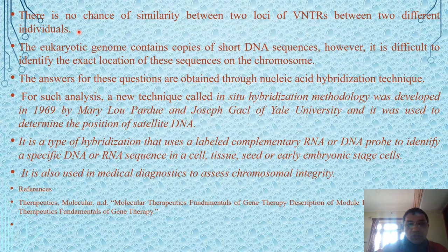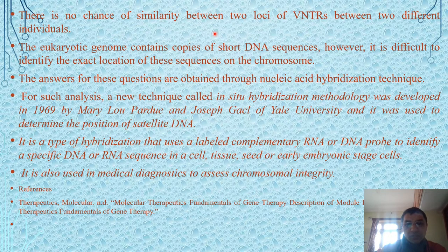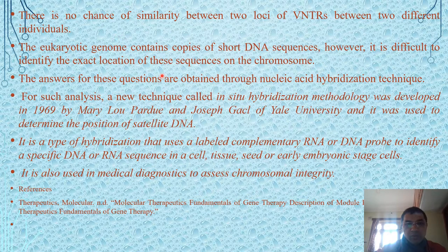There is no chance of similarity between the two loci of VNTRs between two different individuals, because these are hypervariable regions. These variable number of tandem repeats are hypervariable regions, so there is very less similarity between two individuals because these are hypervariable sequences.